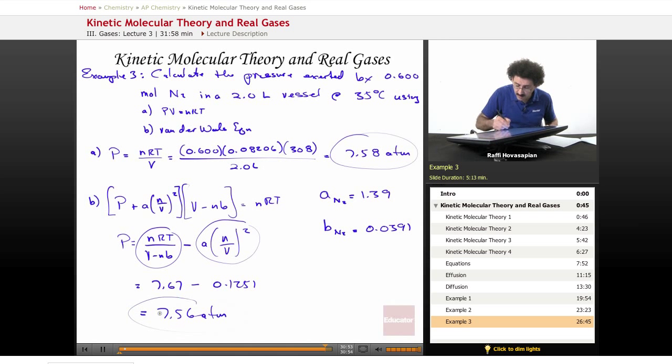So, notice, under the ideal gas law, we have 7.58 atmospheres, using the real gas behavior, we have 7.56 atmospheres. 7.56 and 7.58 are virtually the same. So, under these conditions, we are welcome to go ahead and use the ideal gas law.